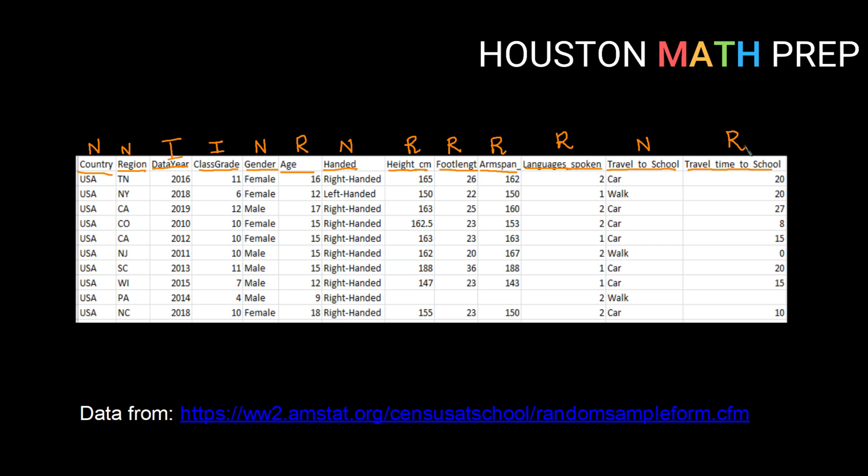When looking at a data set with different categories, break it down first into quantitative versus qualitative. For qualitative, ask: can I put it in order? If yes, it's ordinal; if no, it's nominal. For quantitative, ask: does the ratio make sense? If so, it's ratio. Does only the interval make sense? Then it's interval. Alright, that does it for this video — we'll catch you in the next one.